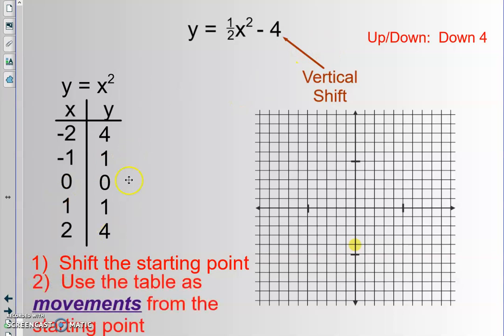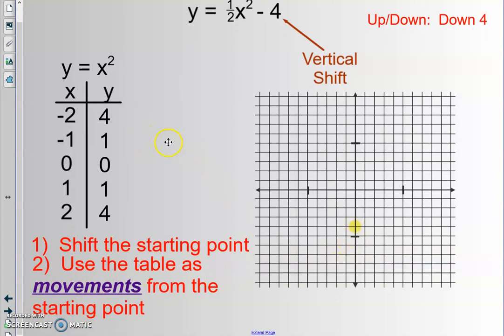We normally start graphs right here at the origin. But in this case, you can see this minus four at the end. That's going to be a vertical shift. And so we're going to start by moving down four. So my new origin, or my new starting spot, is actually going to be right here, down four.